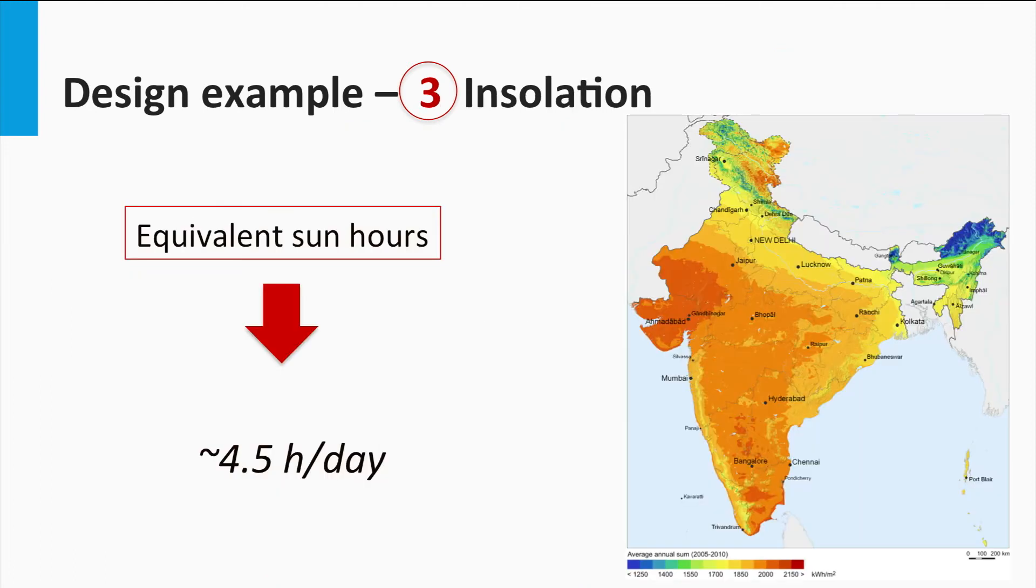Next, we consider the irradiance. Going by the same example as in the stand-alone system case, a location in India is considered with an average of 4.5 equivalent sun hours.